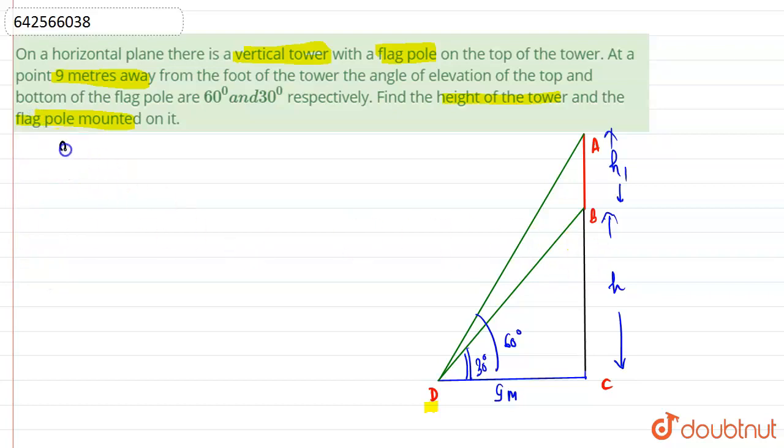First apply in triangle BCD. In triangle BCD we can apply tan 30°. So tan 30° is equal to H upon 9, perpendicular upon base. So H is equal to 9 by root 3, which is nothing but 3 root 3. This is equation 1.